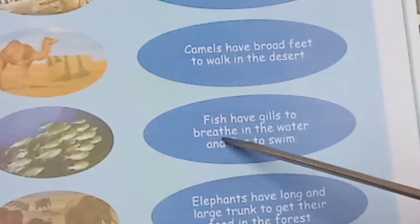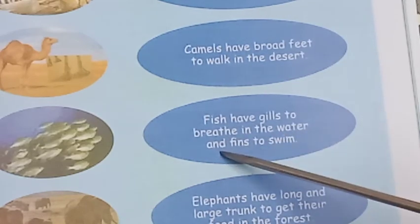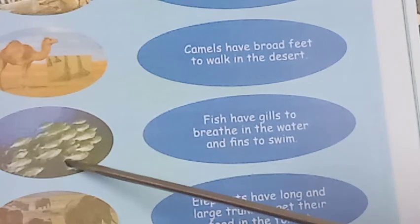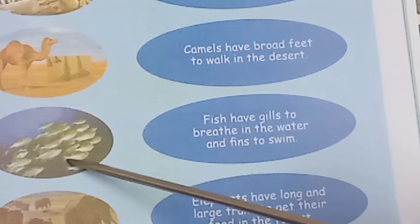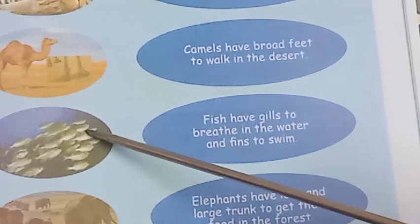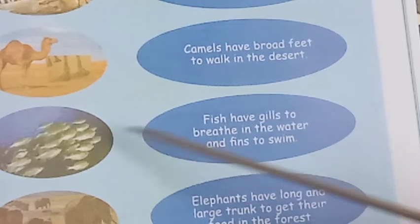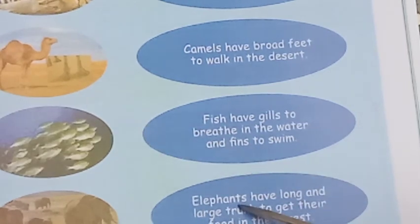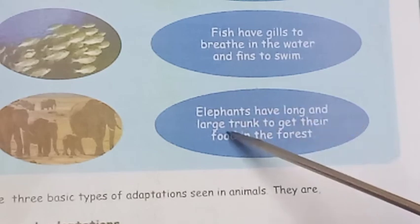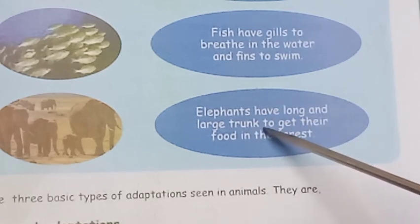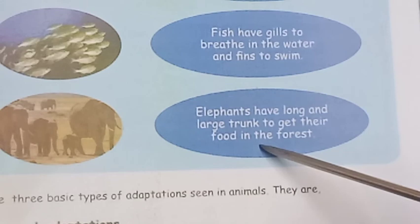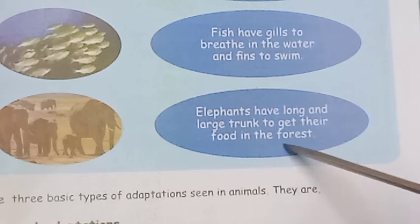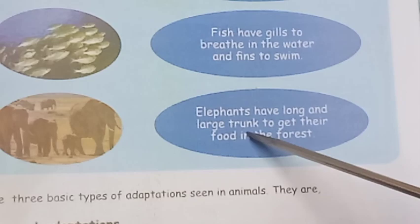Fish have gills to breathe in water and fins to swim and change direction. Elephants have a long and large trunk which they use to eat plants and bark in the forest. This lesson will continue in the next video.